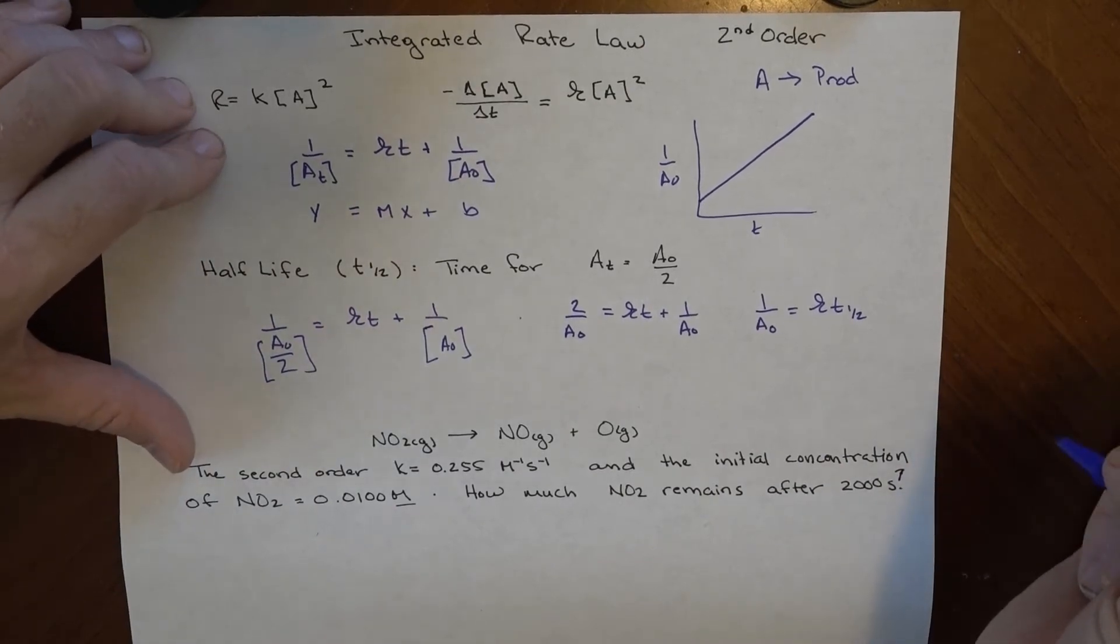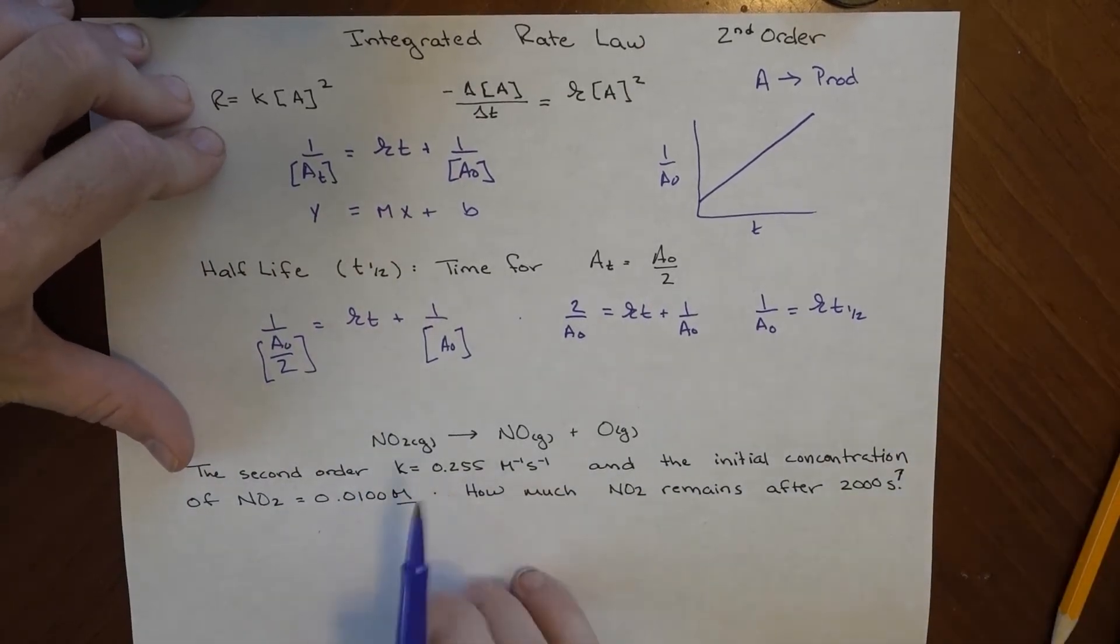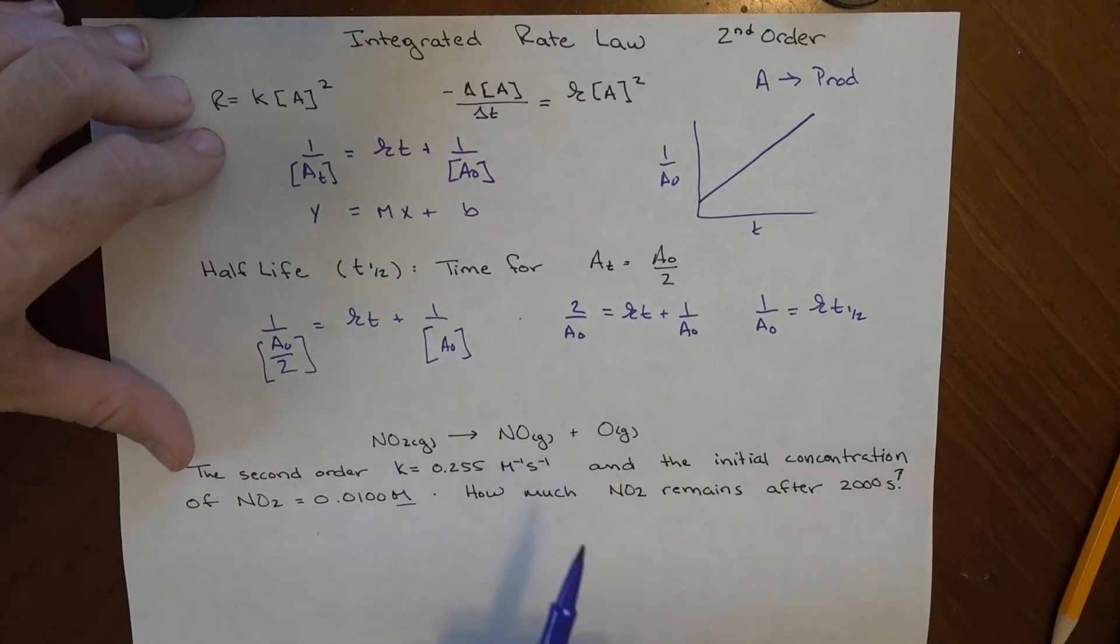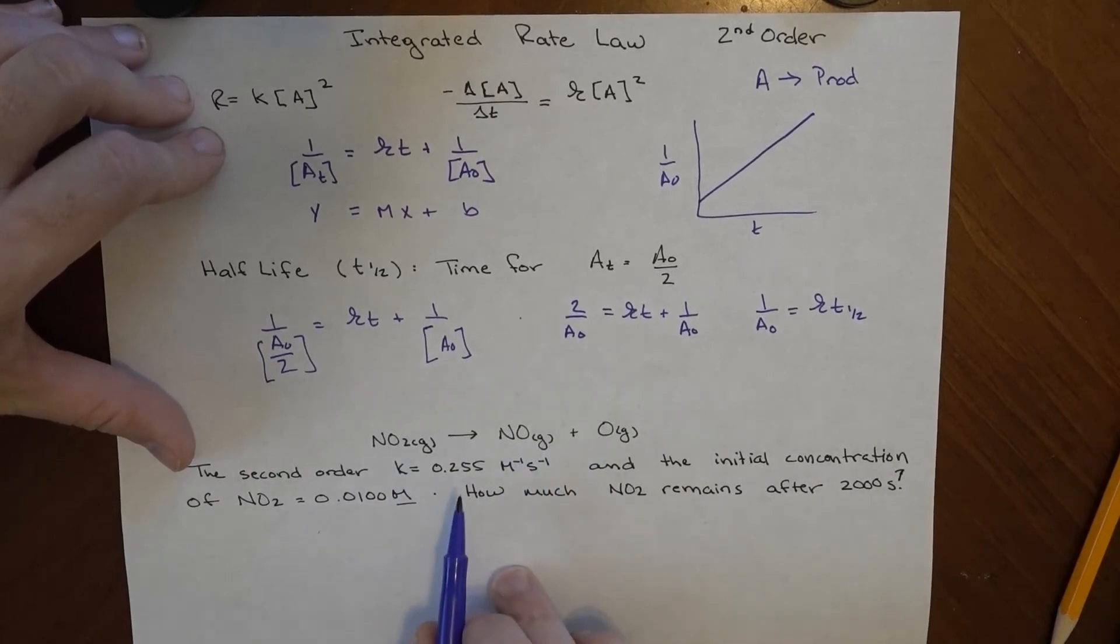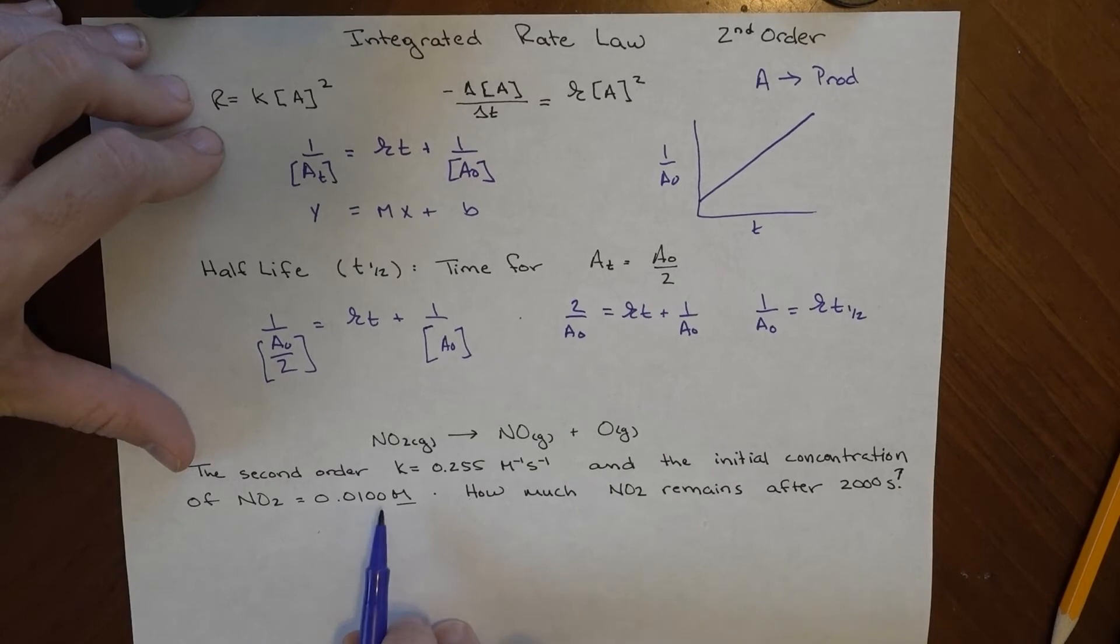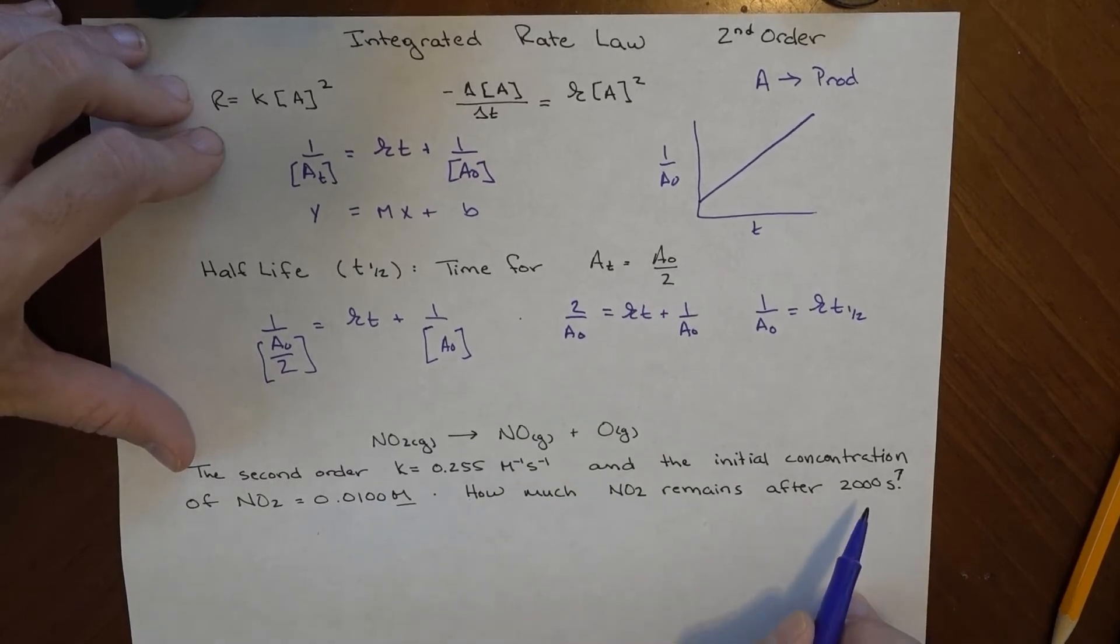Now let's put this to use. I've got this reaction here: NO₂ goes to NO and O₂, and it's got a second-order rate constant of 0.255 per molar per second, and the initial concentration is 0.01 molar NO₂. How much NO₂ remains after this reaction has been going for 2,000 seconds?